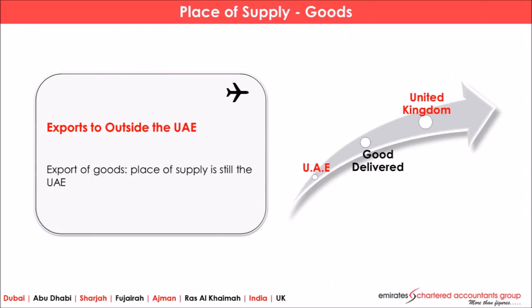Now, suppose goods are moving from Dubai to another country — for example, from the UAE to the UK. In the case of export, as per the place of supply rule, the place of supply is UAE. But the rate of tax is zero rated. There are two types of exports: one is direct export, and the other is indirect export.